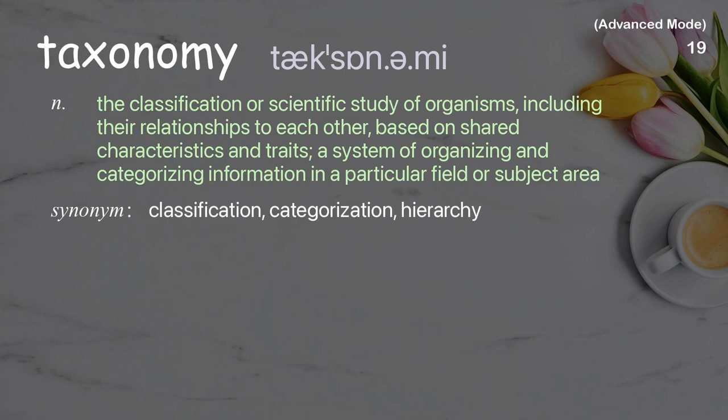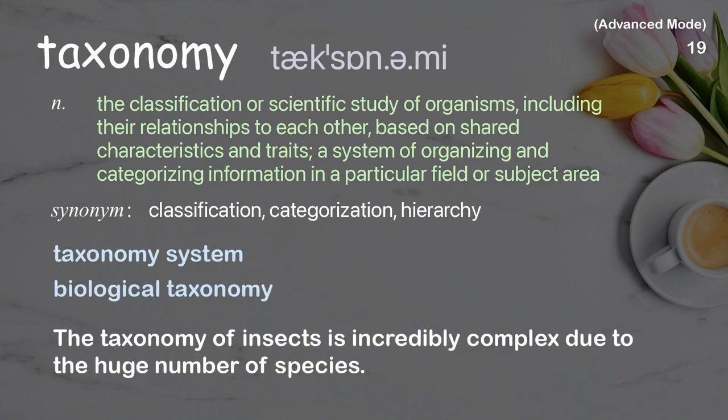Taxonomy: the classification or scientific study of organisms, including their relationships to each other based on shared characteristics and traits; a system of organizing and categorizing information in a particular field or subject area. Examples: taxonomy system, biological taxonomy. The taxonomy of insects is incredibly complex due to the huge number of species.